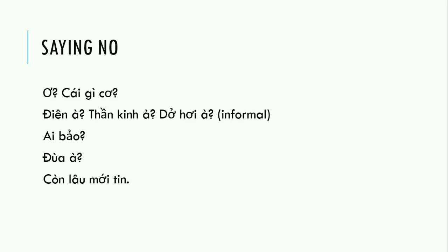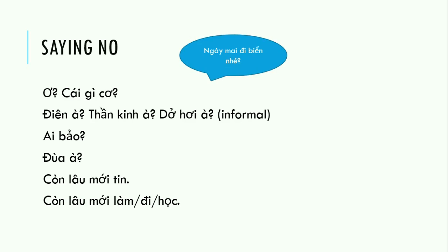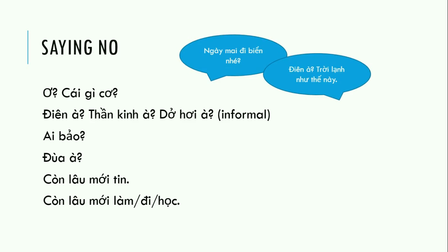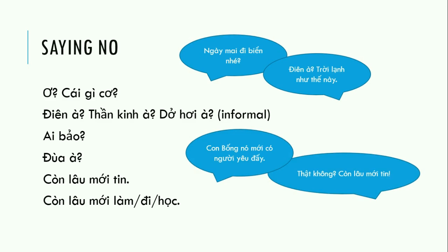'Còn lâu mới tin' means 'it will be a long time before I believe it' — essentially 'I will not believe it under any circumstance' or 'I will not do it under any circumstance.' For example: 'Ngày mai đi biển nhé?' — 'Điên à, trời lạnh như thế này!' — 'Tomorrow shall we go to the beach?' — 'Are you crazy? It's so cold!' And: 'Bống nó mới có người yêu đấy.' — 'Thật không? Còn lâu mới tin.' — 'Bống just got a new boyfriend.' — 'Really? I do not buy it.'